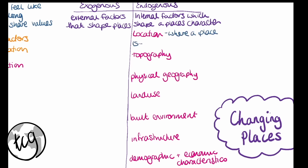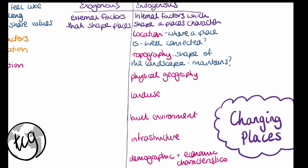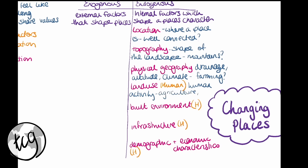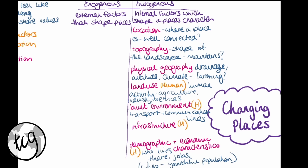Location is where the place is — if well connected, it may have more access to technology and different cultures. Topography is the shape of the landscape; mountainous areas create harsh conditions and may have low population density. Physical geography includes drainage, geology, altitude and climate. Land use is a human factor — whether agricultural, industrial, residential or retail. Built environment and infrastructure includes transport and communication lines; poor infrastructure may limit access. Demographic and economic characteristics include who lives there and what they do — cities usually have a more youthful population and a high cultural mix.